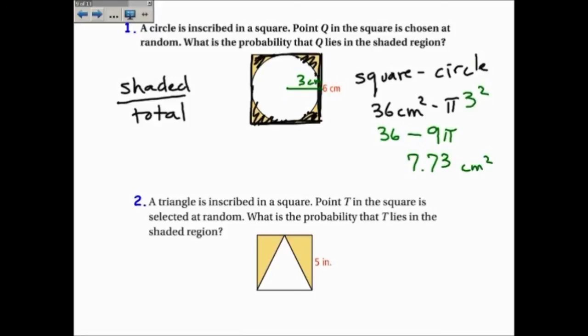Now, the total area is going to be our square, or 36 centimeters squared. So the fraction becomes 7.73 centimeters squared over 36 centimeters squared, and so I get a probability of 0.21. Again, there's no units.